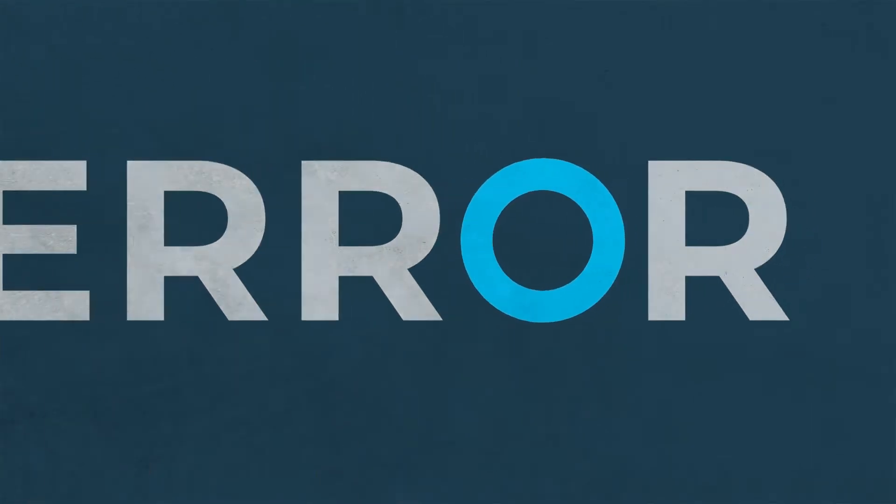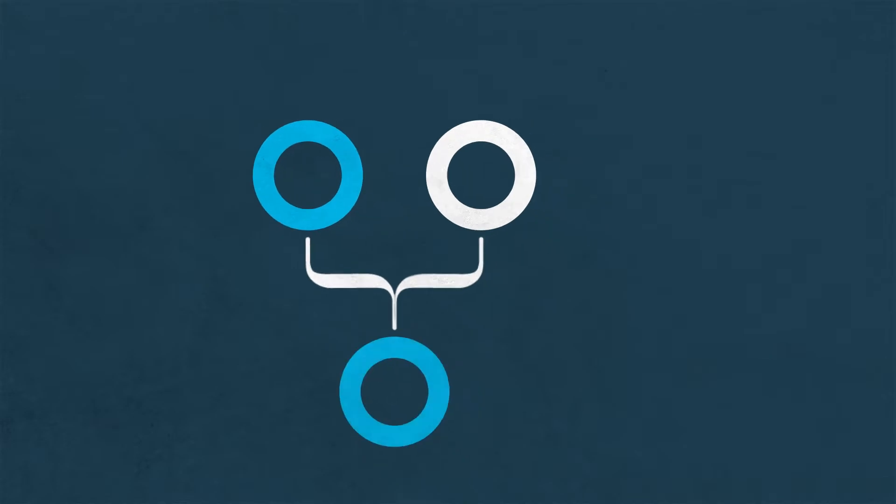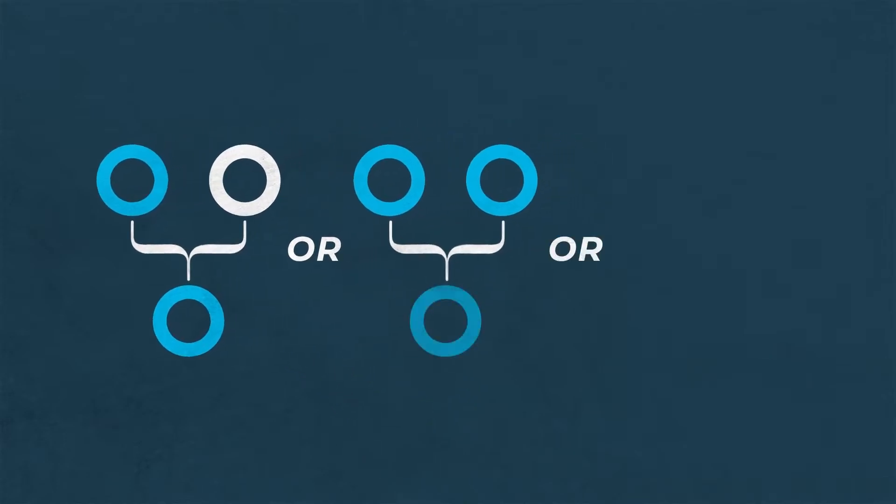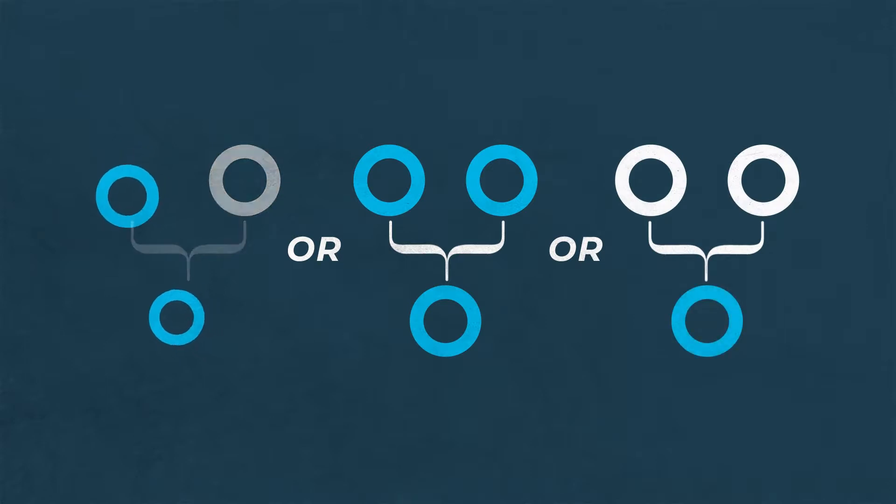The disease a person has depends on which gene in their DNA has the error. Depending on the disease or disorder, it can be inherited from one or both parents. Or sometimes it's a change that just happens randomly.